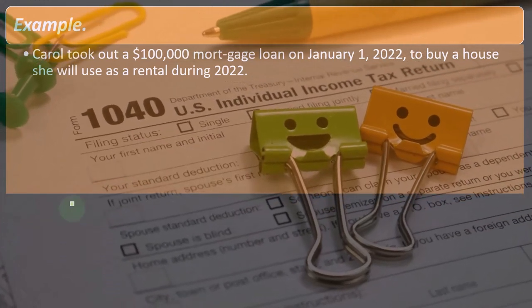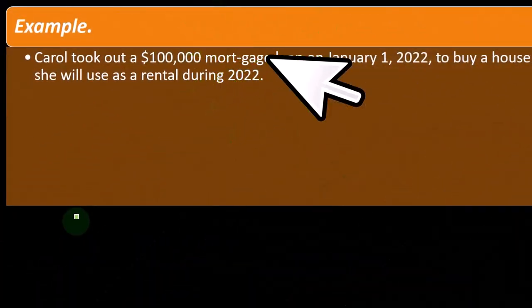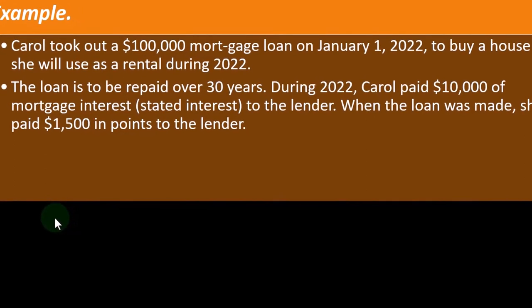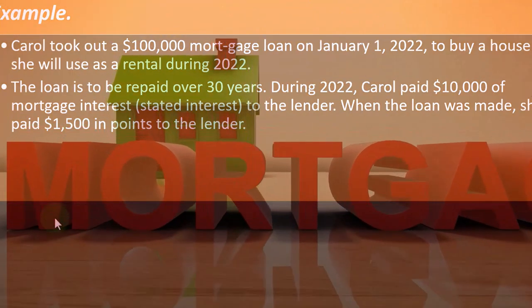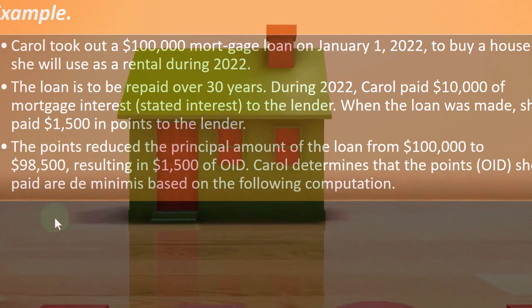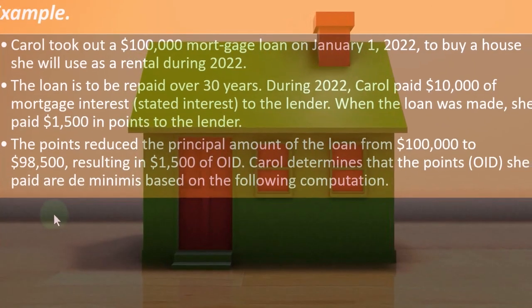Example: Carol took out a $100,000 mortgage loan on January 1st, 2022 to buy a house she will use as a rental during 2022. The loan is to be repaid over 30 years — a standard but quite long loan. During 2022, Carol paid $10,000 of mortgage interest (stated interest) to the lender. When the loan was made, she paid $1,500 in points to the lender. The points reduced the principal amount of the loan from $100,000 to $98,500, resulting in $1,500 OID.